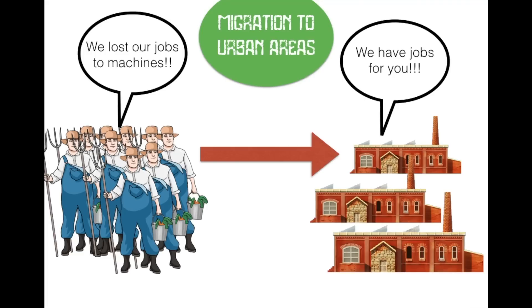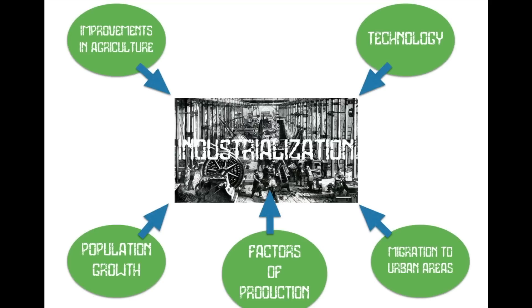Farmers who lost their jobs to new technology and machines on the farm begin moving into the cities and factories, becoming wage workers. We're transitioning from a population of mostly subsistence farmers — who grew what they needed to survive — to urban workers who earn a wage. To summarize: developments in technology led to improvements in agriculture, which resulted in population growth; countries with the factors of production could industrialize; and migration of people from rural to urban areas made it all possible.